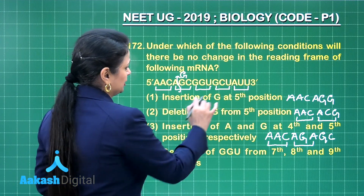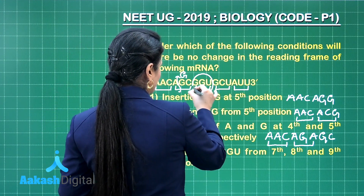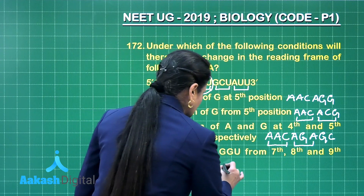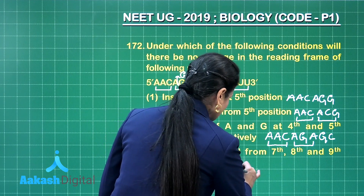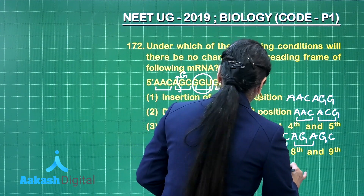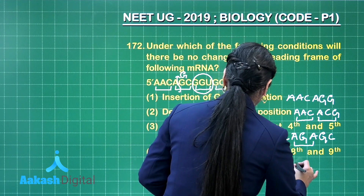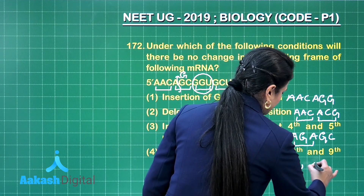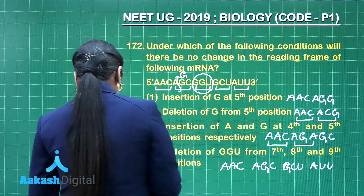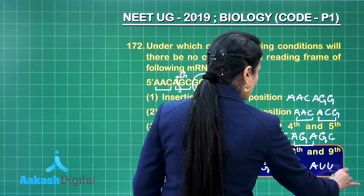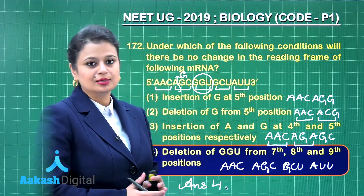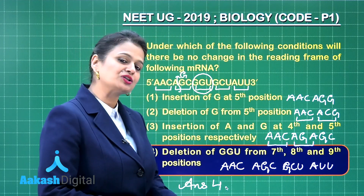Option four: deletion of GGU — that complete codon, the seventh, eighth, and ninth bases, is removed. Now the first codon is AAC, second is AGC, third is GCU, and then AUU. The reading frame has not been changed, because an entire codon was deleted. So the answer to this question is option number four. Let's move on to the next question.